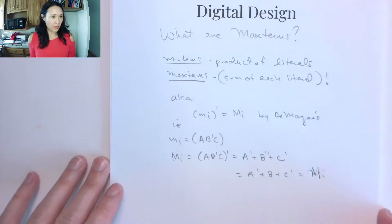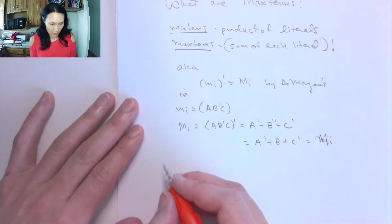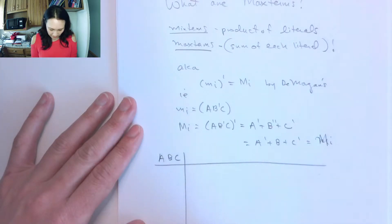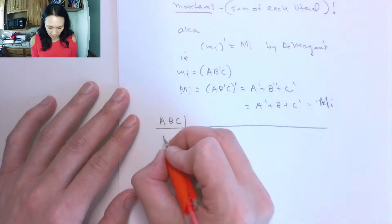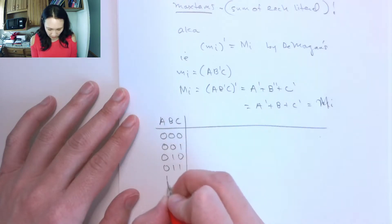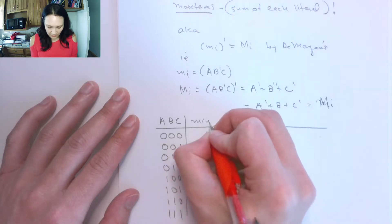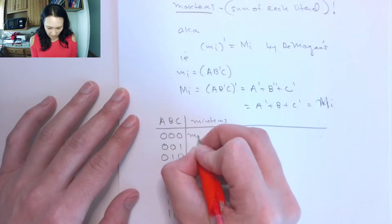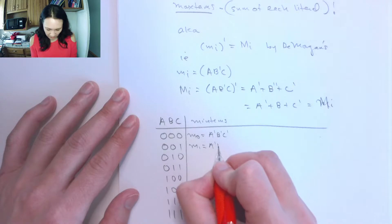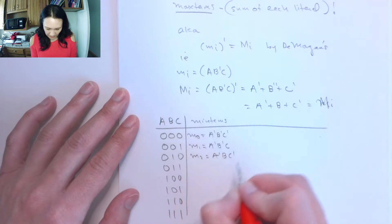Functions can be expressed in either min term or max term form. Let me write out a few for three-input functions. For inputs 0,0,0 through 1,1,1, the min terms are: min term 0 is a'b'c', min term 1 is a'b'c, min term 2 is a'bc', and so on through all eight rows.